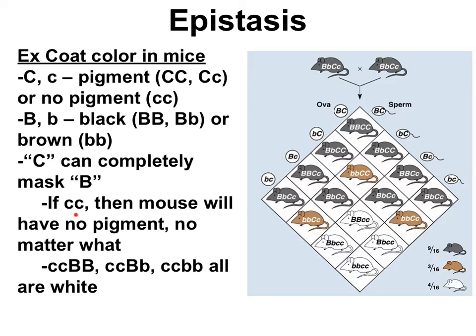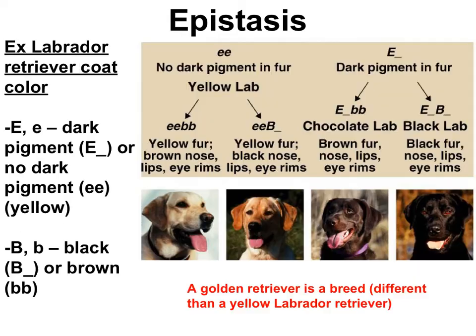So genotypes little c little c with any combination at the B locus — big B big B, big B little b, or little b little b — are all white because of epistasis. A similar example of epistasis happens in Labrador retrievers.